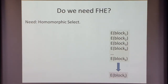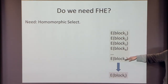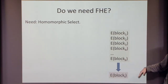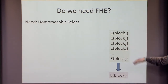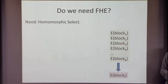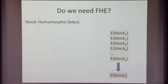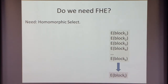But do we really need FHE? The hope is to get rid of it. What do we need to do? We need some sort of a homomorphic select. We have K blocks — think of these as the values on a path in the tree. K is something logarithmic in N, polylogarithmic in N. We want to select one of them, the i-th one — either because we're reading it, or because we want to move it to some other location.